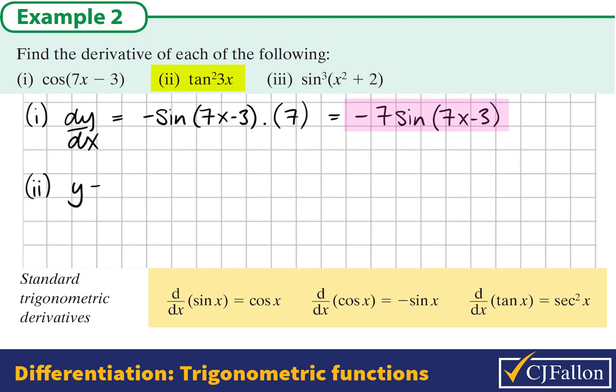Find the derivative of tan squared 3x. Tan squared 3x means tan of 3x to be squared. There are three layers to this: the power, the tan, and the angle.